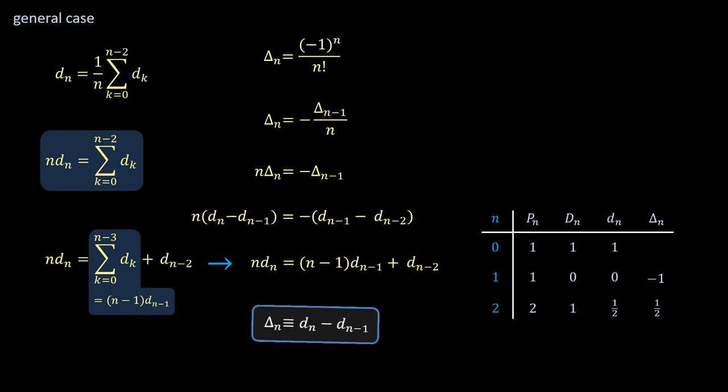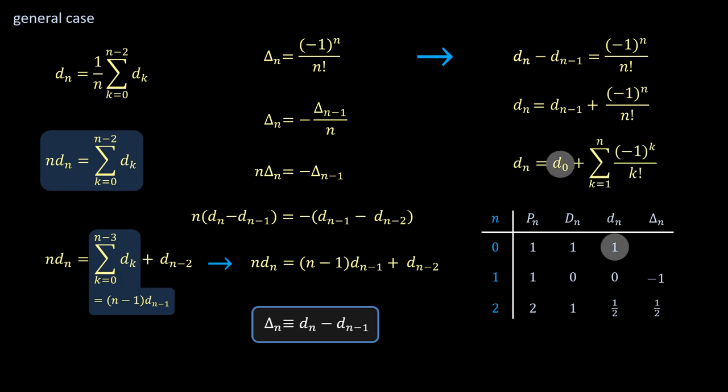The intermediate variable delta_n has done its job. Time to return to the body of interest, d_n, which presents the next recursive equation to solve. But this is a simple one. Just sum out all the terms and plug in d_0, which equals 1.